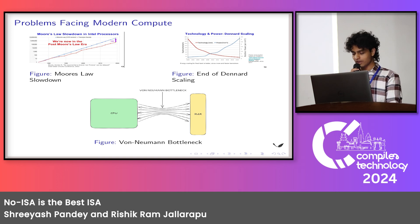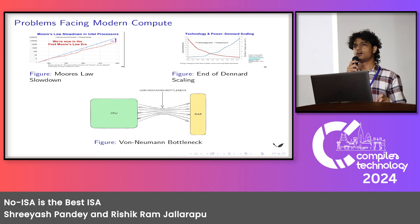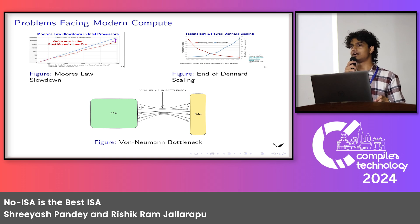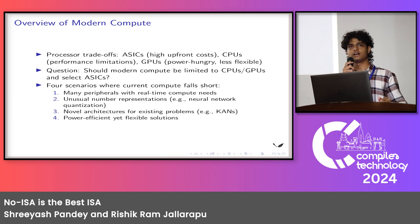I mention these because these are hot problems in that there is a need for solutions. Moore's Law is slowing down. Dennard scaling has almost ended. And the Von Neumann bottleneck has plagued us for more than 80 years now. So, what does modern compute look like?